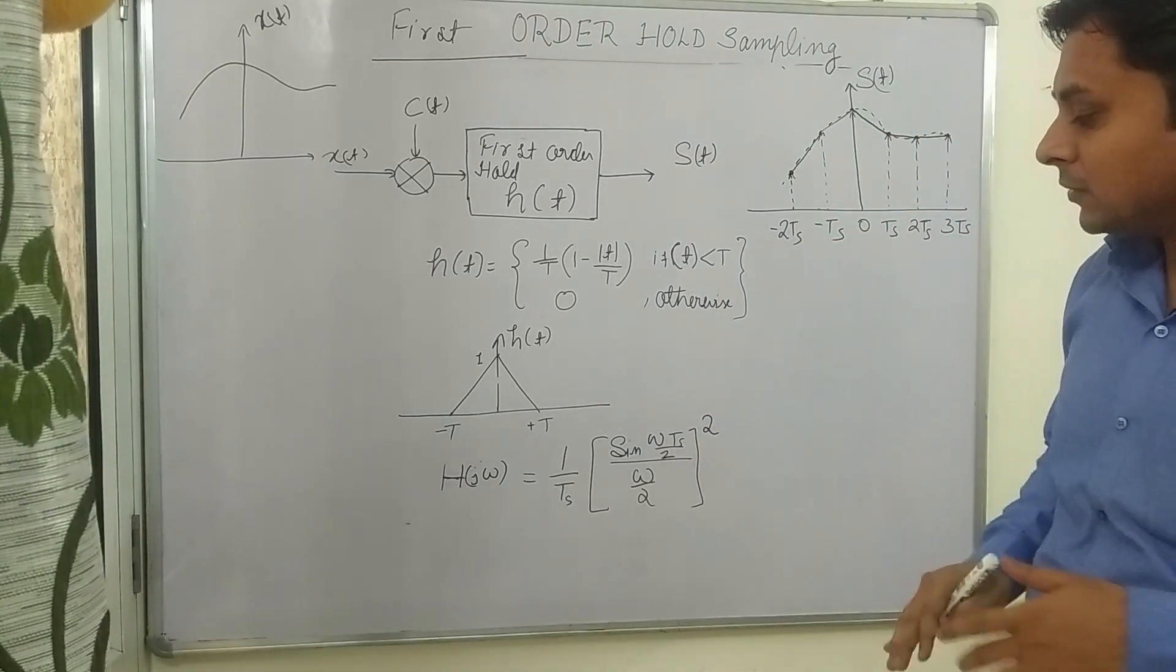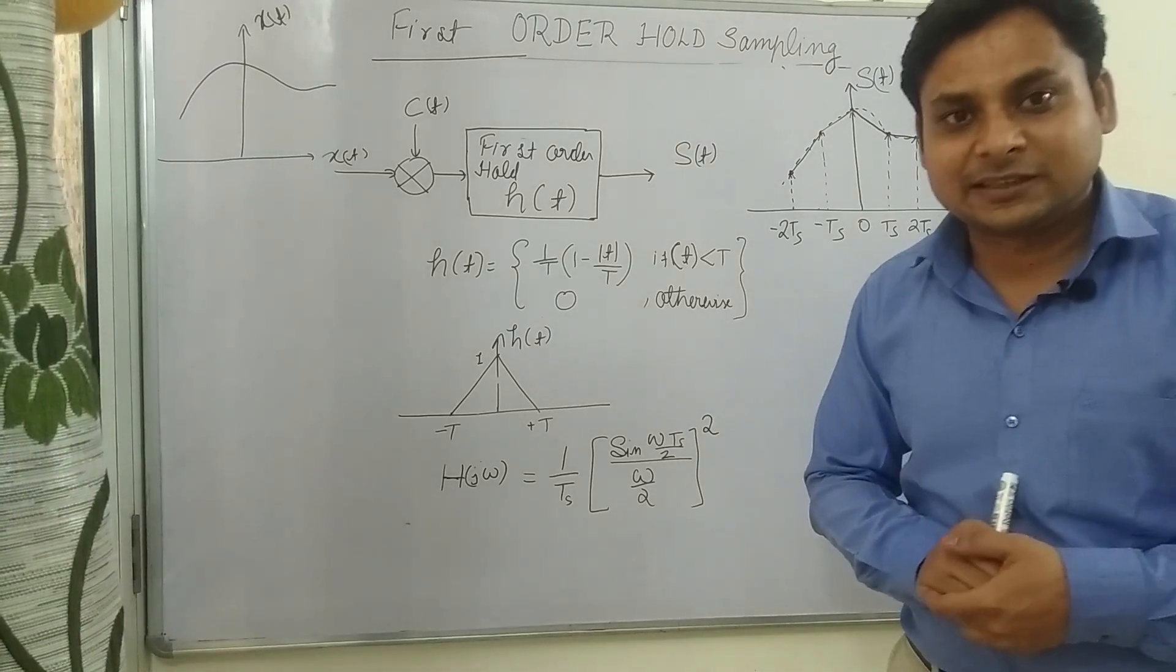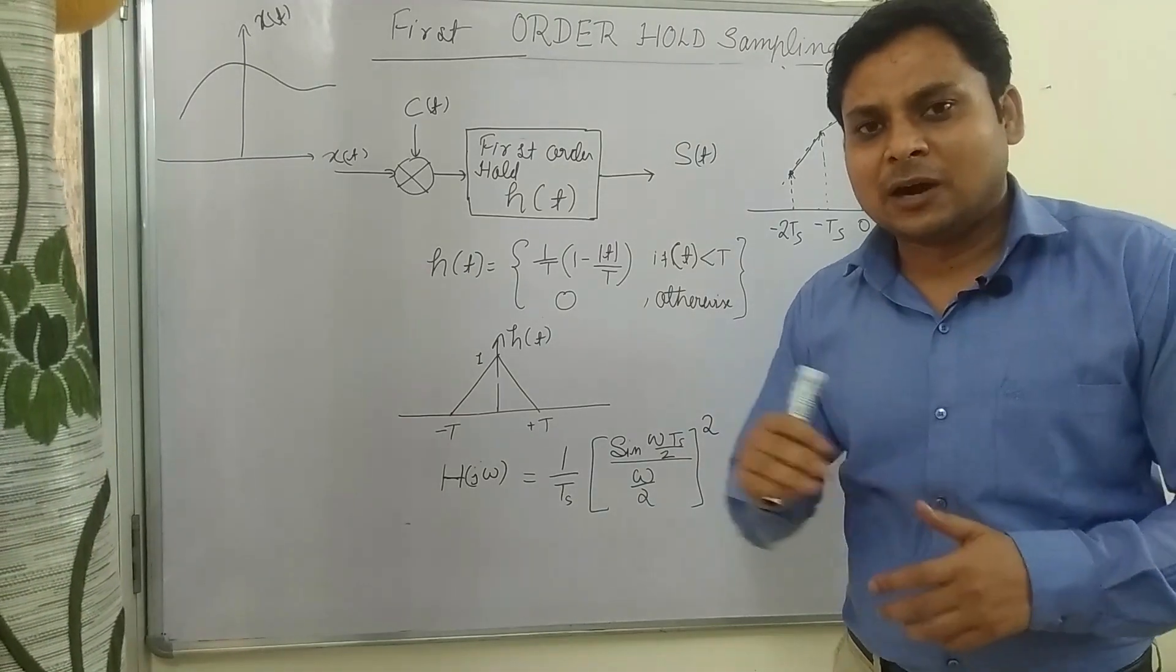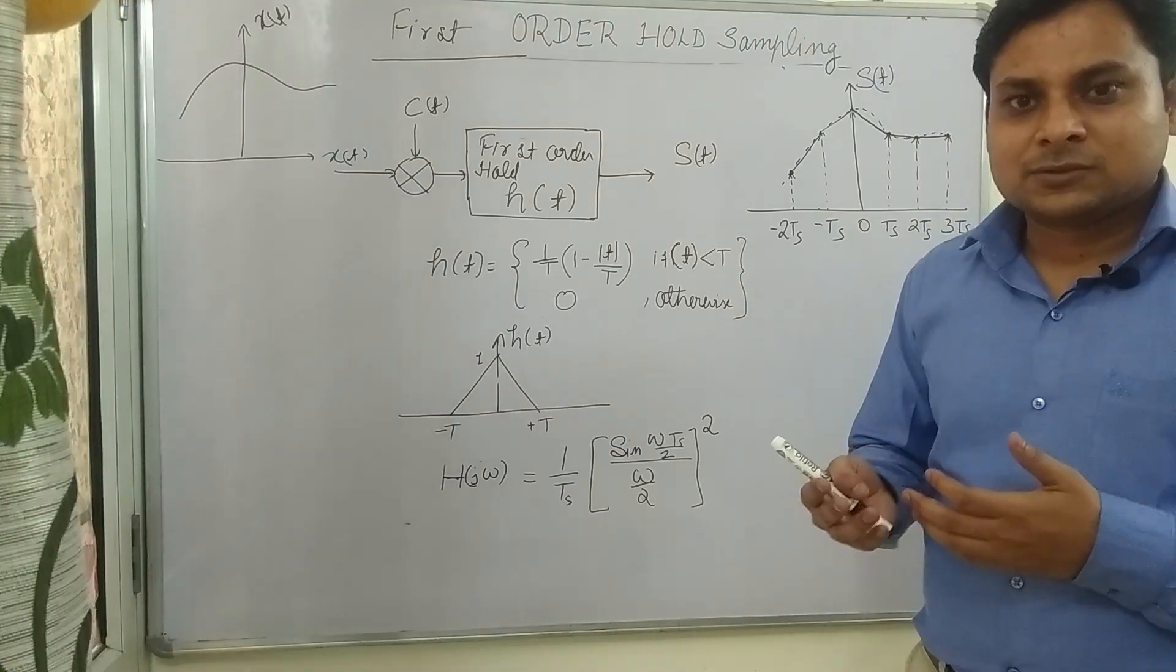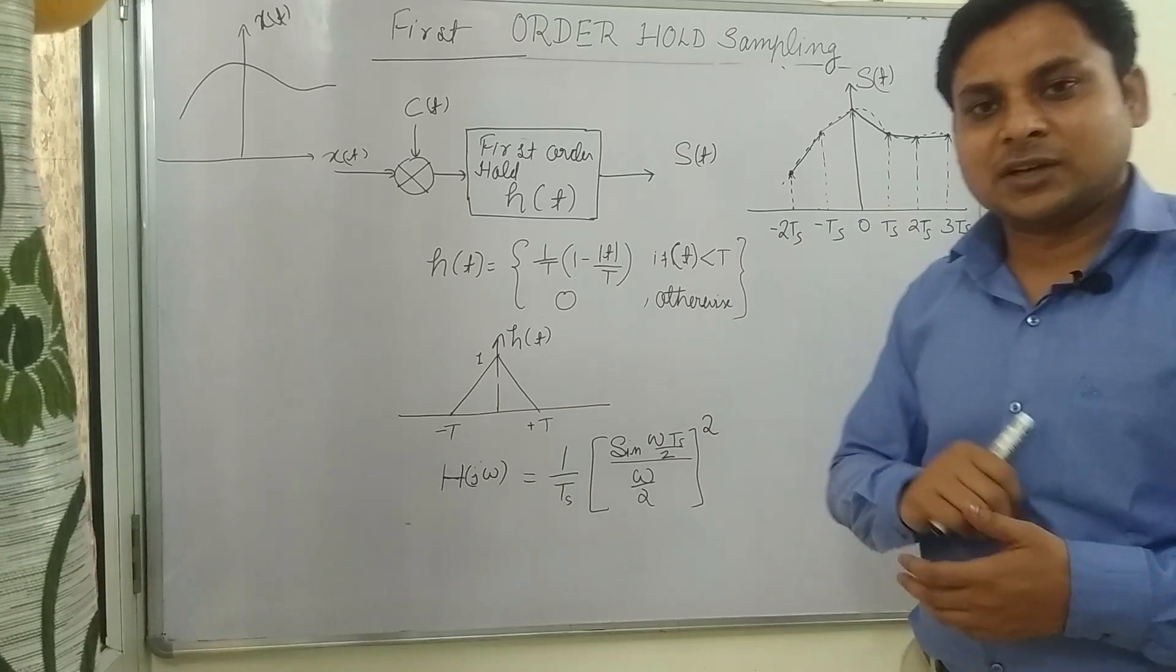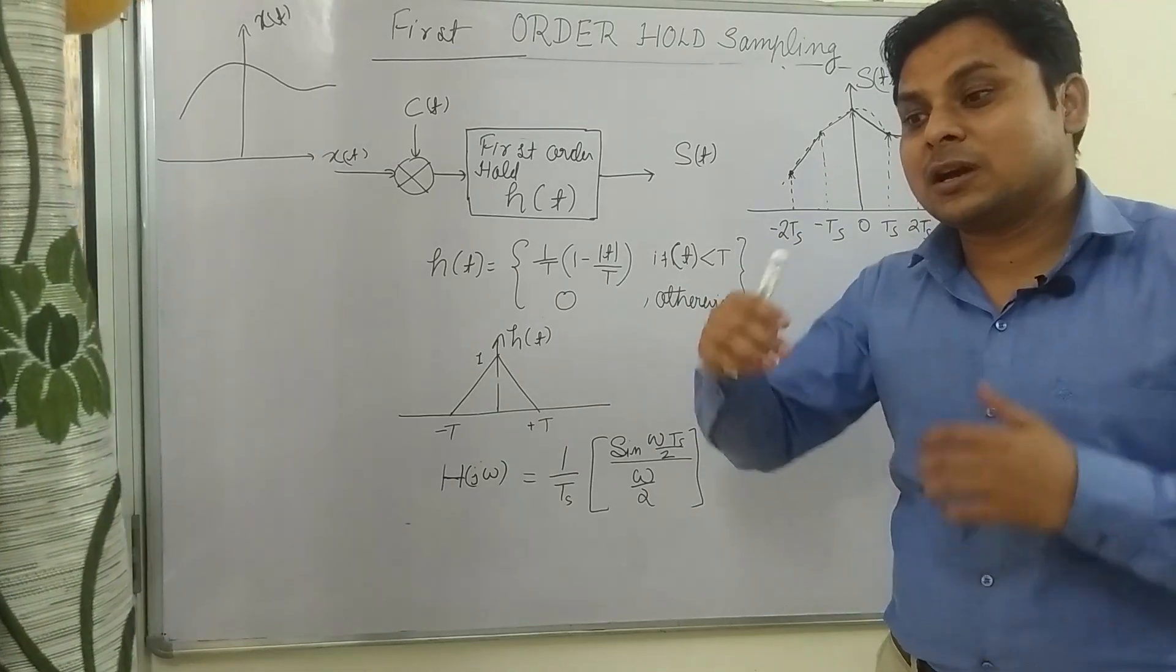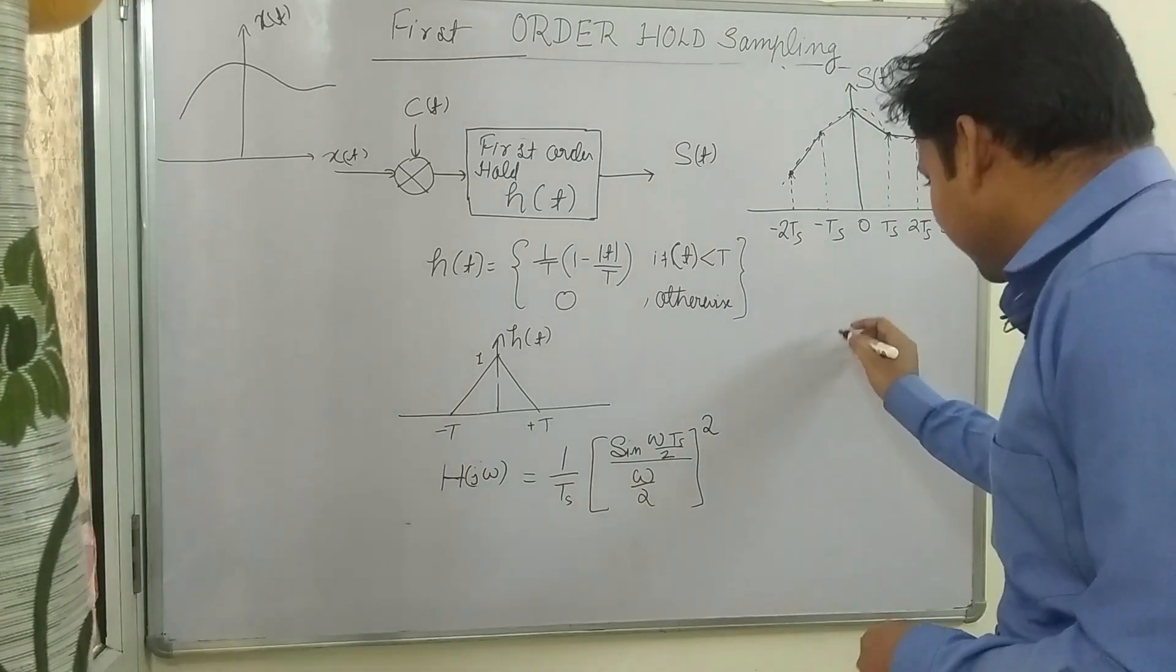That omega will be the frequency of the signal. Now we want to smooth it further. Here we have used a triangular function, but we can use higher orders also. Now look at this: